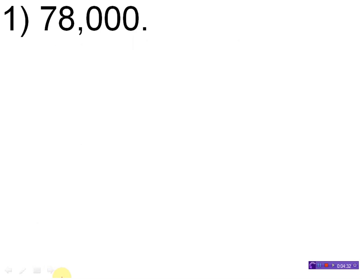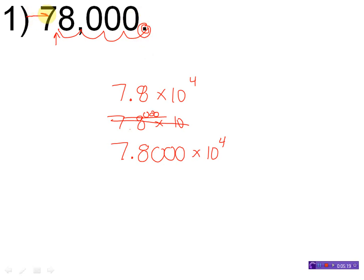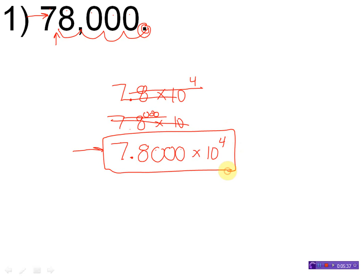Let's convert 78,000 into scientific notation. I take my decimal place and move it in between the first two numbers — one, two, three, four places. This is going to be 7.8 times 10 to the fourth. Which one is the best choice — 7.8 times 10 to the fourth, or 7.80000 times 10 to the fourth? It all comes down to significant figures. In the original number, the decimal point arrow comes in this way and hits the 7 — that's one, two, three, four, five sig figs. So 7.80000 times 10 to the fourth matches the original correctly based on significant figures.